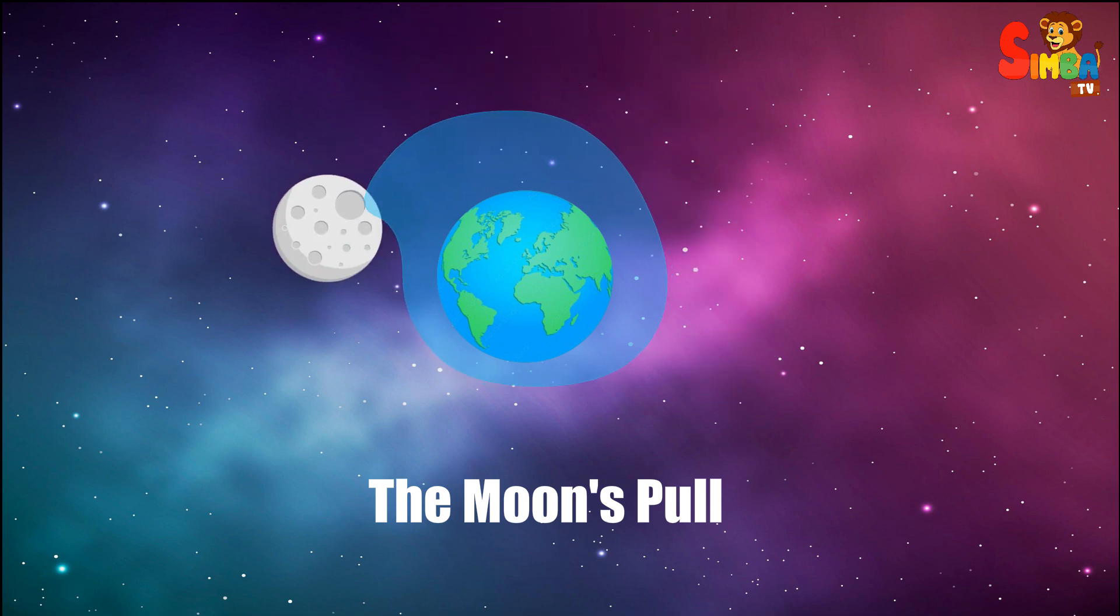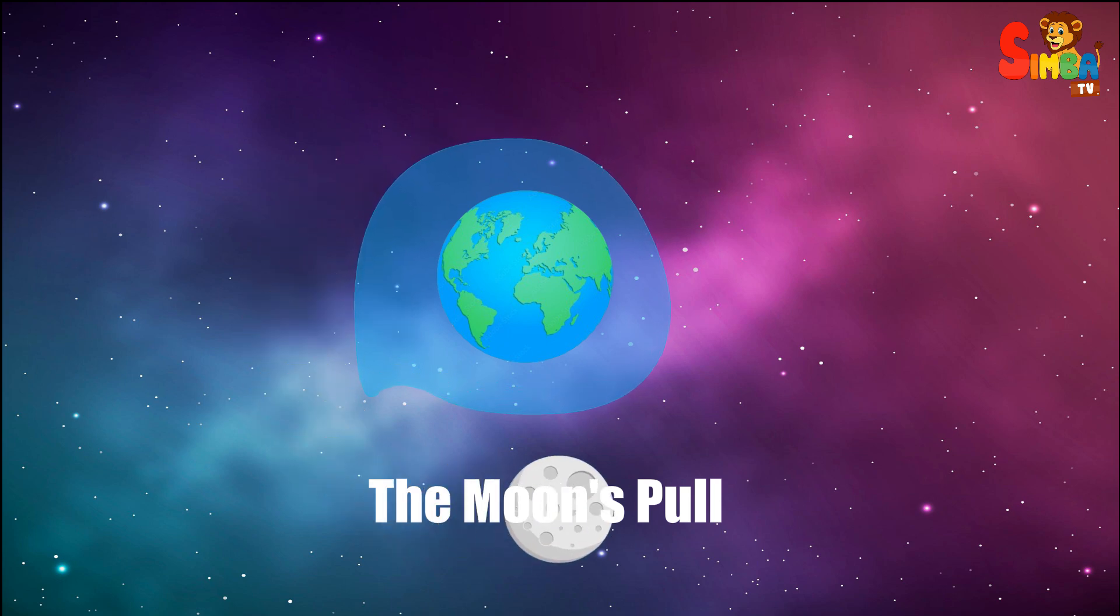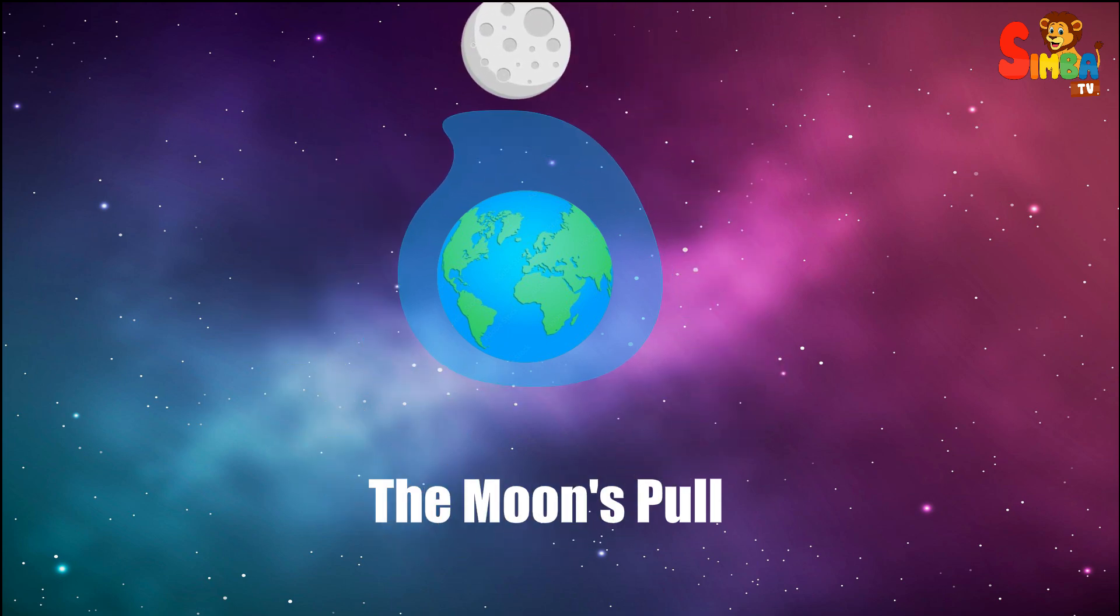The moon's pull. Imagine the moon is like a big magnet in the sky. It pulls on the water in the ocean, making it rise. This is called high tide. When the moon is over one part of the earth, it pulls the water there, making it higher.